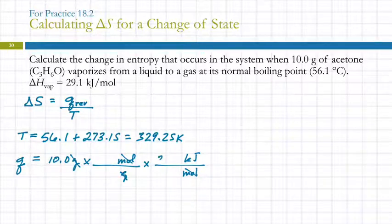We can use delta H, 29.1 kilojoules per mole, and we need the molar mass of acetone. We were given the formula, C3H6O. So we've got 3 times the mass of carbon plus 6 times the mass of hydrogen plus the mass of oxygen.